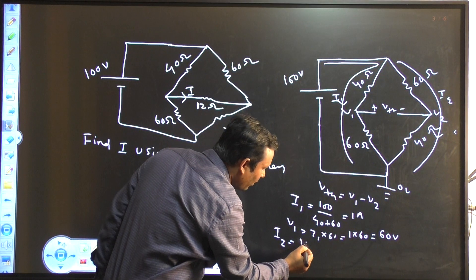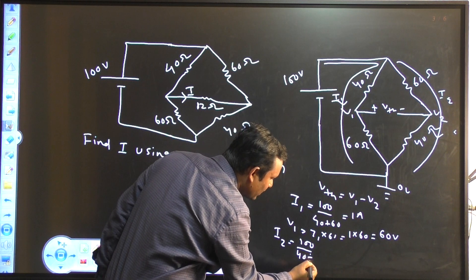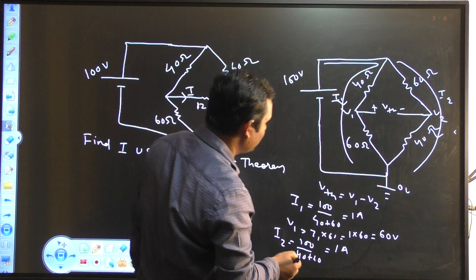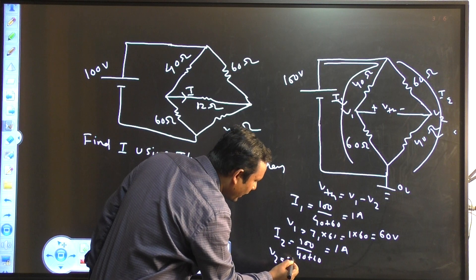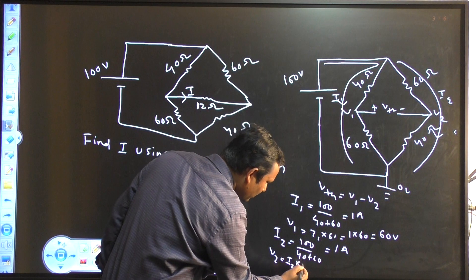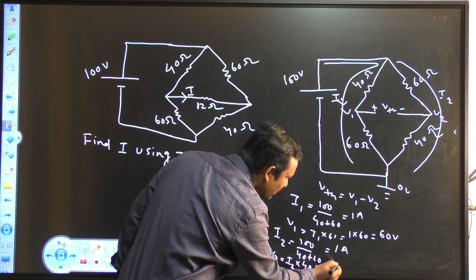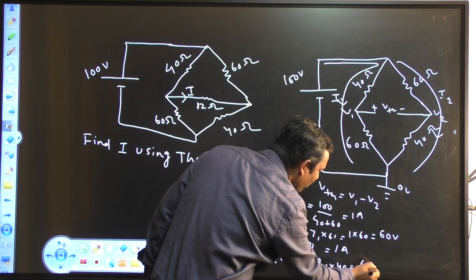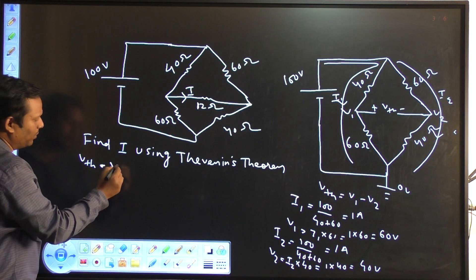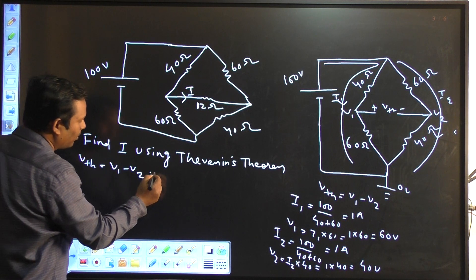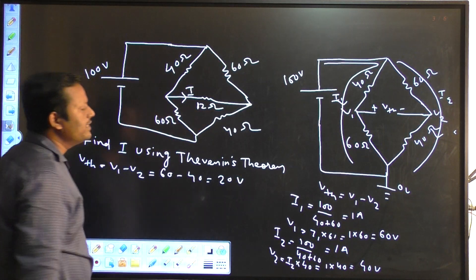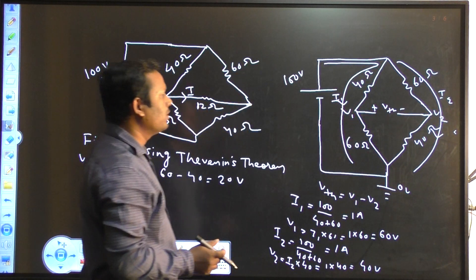Your I2 will be 100 divided by 40 plus 60, this will also be 1 ampere. So your V2 is I2 into this resistor 40, this will be 40 volt. So V2 is 40 volt. So what is Vth? Your Vth is V1 minus V2, which is 60V minus 40V, which will be 20V. So your Vth is 20V across this open-circuited terminal.